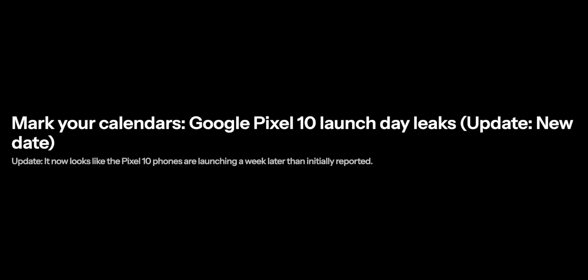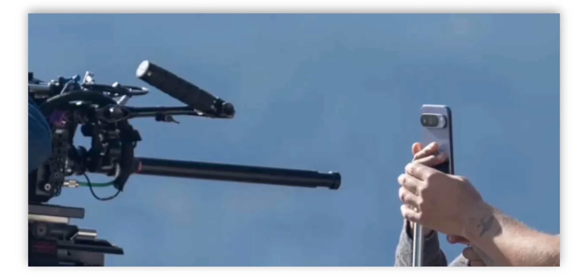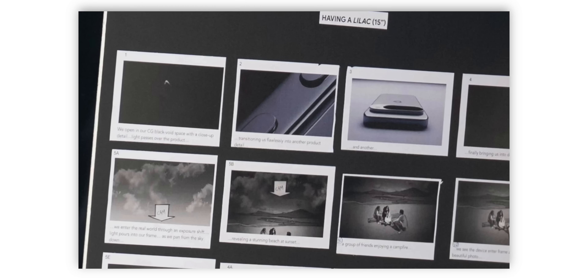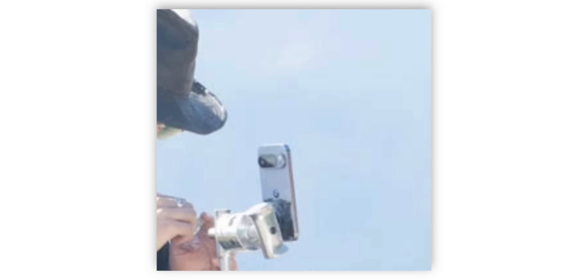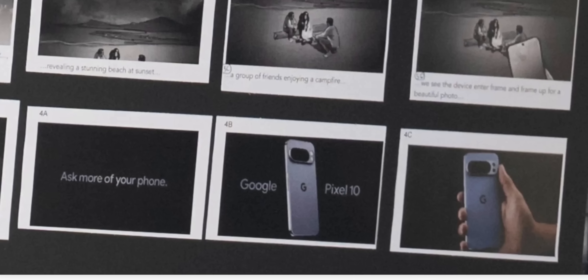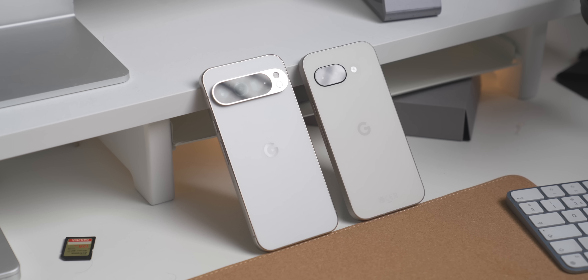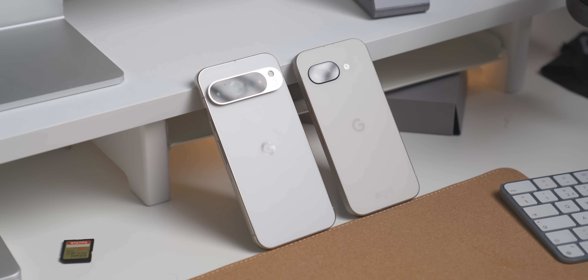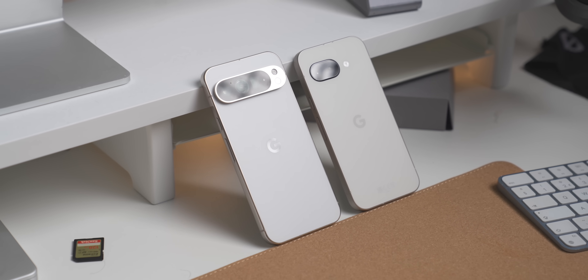The Pixel 10 isn't that far away, and according to a load of reports we could be seeing it sometime in August. In classic Google style, we've seen a load of leaks already — there were even pictures taken of Google filming what looks like the Pixel 10 commercial, and we know it was the Pixel 10 because the storyboard said so. From those leaks, the Pixel 10 probably isn't going to change too much design-wise, and I don't mind that because Google absolutely killed it with the Pixel 9 — probably one of the best designed phones of the year.